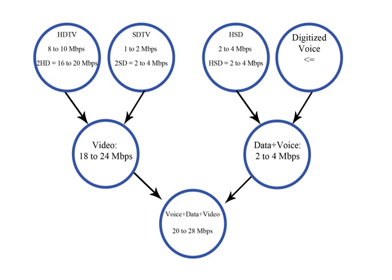Internet Protocol Television is the delivery of television content over Internet Protocol networks. This is in contrast to delivery through traditional terrestrial, satellite, and cable television formats. Unlike downloaded media, IPTV offers the ability to stream the source media continuously. As a result, a client media player can begin playing the content almost immediately. This is known as streaming media.